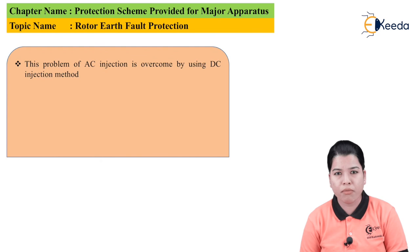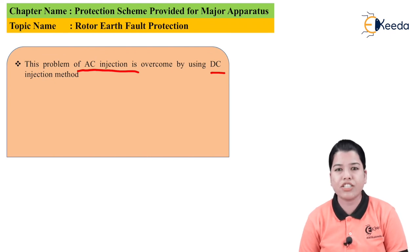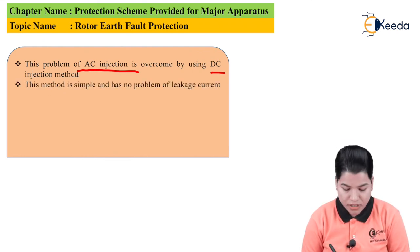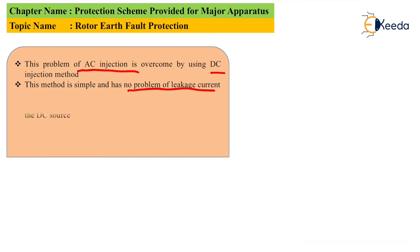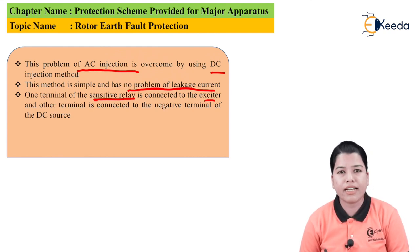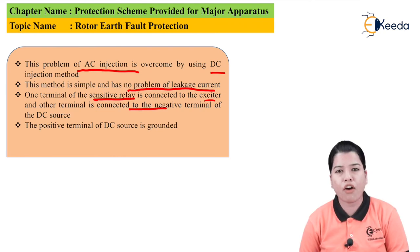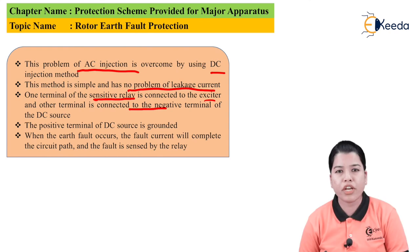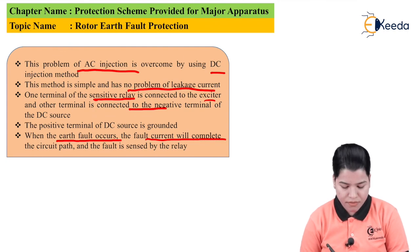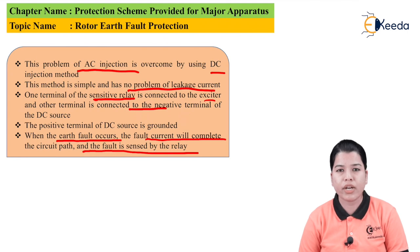The problem of AC injection can be overcome by using the DC injection method — that is, instead of AC current, we inject DC. This method is very simple and has no problem of leakage current. One terminal of the sensitive relay is connected to the exciter and the other terminal is connected to the negative terminal of the DC source, while the positive terminal of the DC source is grounded. Whenever an earth fault occurs, the fault current will complete its circuit path and the fault will be sensed by the relay. In this way, using these two methods, we can protect the rotor from earth fault.